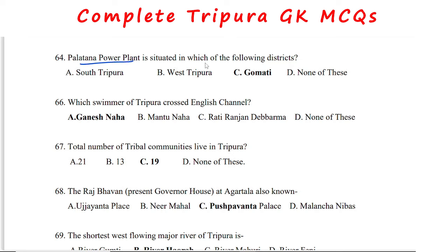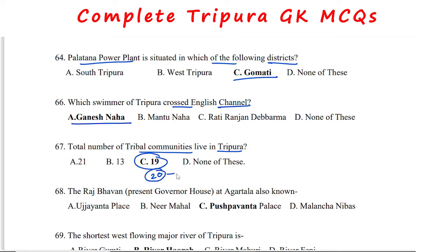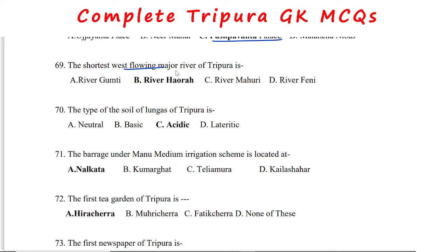The Palatana power plant is situated in Gumuti district. The swimmer from Tripura who crossed the English Channel is Ganesha. The total number of tribal communities in Tripura is 19 (with Darlong recently added as a sub-community of Kuki, making it 20). The shortest west-flowing major river in Tripura is the Haora river. The type of soil in Tripura is acidic.